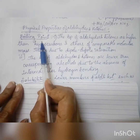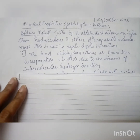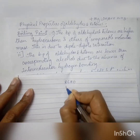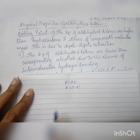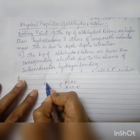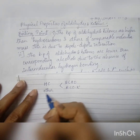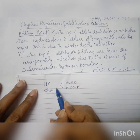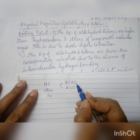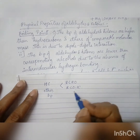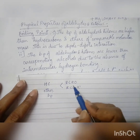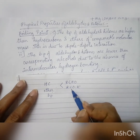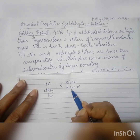Coming to the boiling point, it is seen that the boiling point of aldehydes (RCHO) and ketones (RCOR') is higher than that of corresponding hydrocarbons and ethers of similar molecular mass. Hydrocarbons and ethers have lesser boiling points compared to aldehydes and ketones of similar molecular mass, and this is because there is dipole-dipole interaction in aldehydes and ketones due to the presence of the carbonyl group.